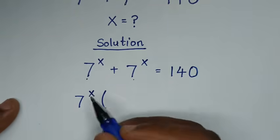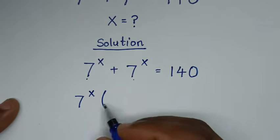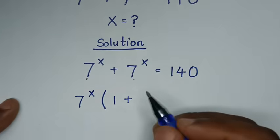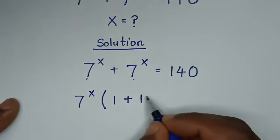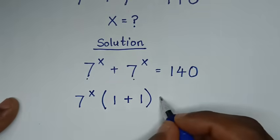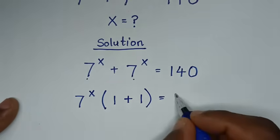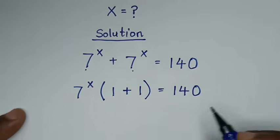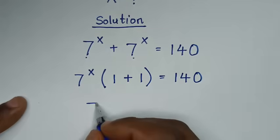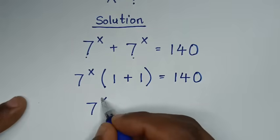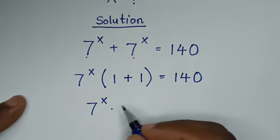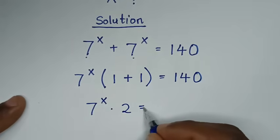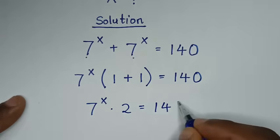Then 7 power of x divided by 7 power of x is 1, plus 7 power of x divided by 7 power of x is 1, in bracket, is equal to 140. Then it will be 7 power of x times 1 plus 1, which is 2, is equal to 140.